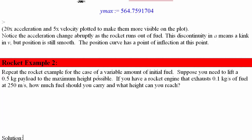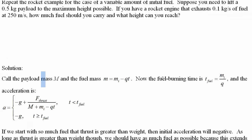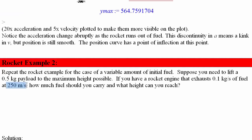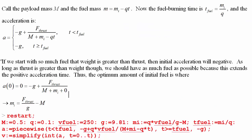We solve the problem with a variable initial fuel mass. Let capital M be the payload mass and lowercase m be the fuel mass. The fuel burning time is the initial fuel mass divided by the flow rate. The acceleration is negative g plus thrust force over total mass. The thrust force is constant since it depends only on fuel velocity and flow rate. If you start with so much fuel that weight exceeds thrust, the initial acceleration is negative, so thrust must exceed weight for liftoff.